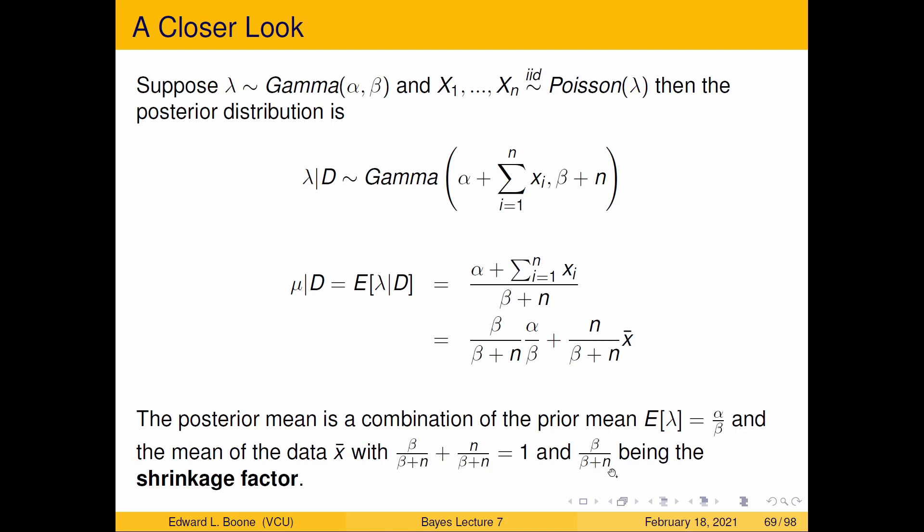And this β over β + n is what's called a shrinkage factor. So it's showing how much the posterior mean is being shrunk towards the prior mean.